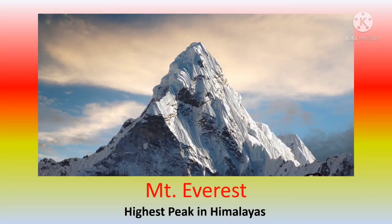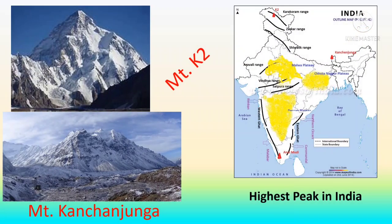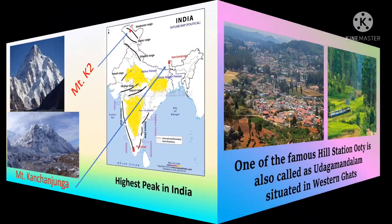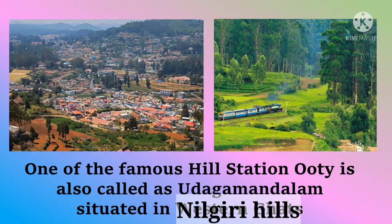The highest peak in the world and in the Himalayas is Mount Everest, situated in Nepal. There is some controversy regarding the highest peak in India. The actual highest peak in India is K2, but it is situated in Pakistan-occupied Kashmir. After K2, the highest peak is Kanchenjunga, situated in Sikkim. The famous hill station Ooty, also called Udhagamandalam, is situated in the Nilgiri Hills.